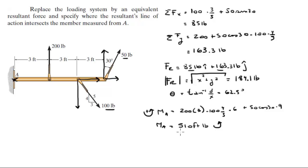Now we have the resultant force which has a magnitude of 184.1. So the moment is equal to the force on the Y because the force on the X is not really creating any moment.